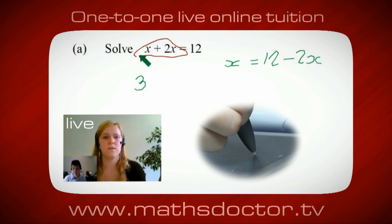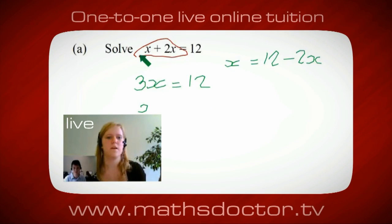Oh, okay, it's 3x, isn't it? Yeah, absolutely. So 3x equals 12. Oh, and so x equals 4. Brilliant, spot on. Well done.